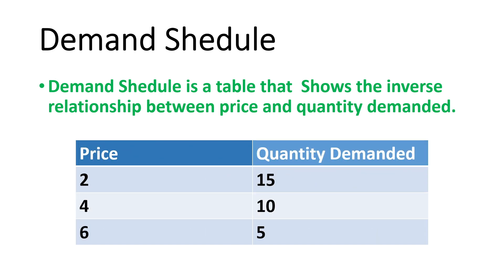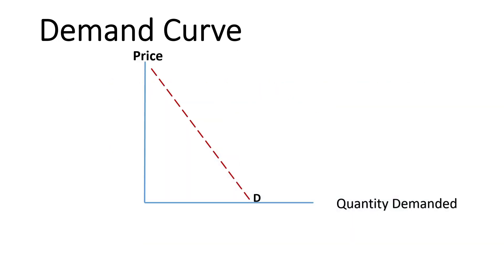Demand schedule is a table that shows the inverse relationship between price and quantity demanded. This table shows that when price is 2, quantity demanded is 15; when price increases to 4, quantity demanded is 10; when price is 6, quantity demanded is 5. So when price increases, quantity demanded also decreases.